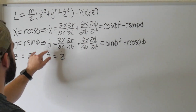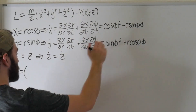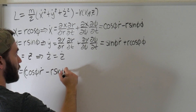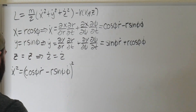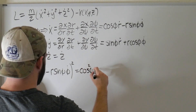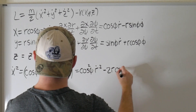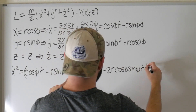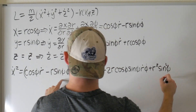The next thing to compute is these squares. x_dot squared is just (cosine φ · r_dot minus r sine φ · φ_dot) squared, which equals cosine² φ · r_dot² minus 2r cosine φ sine φ · r_dot · φ_dot plus r² sine² φ · φ_dot².